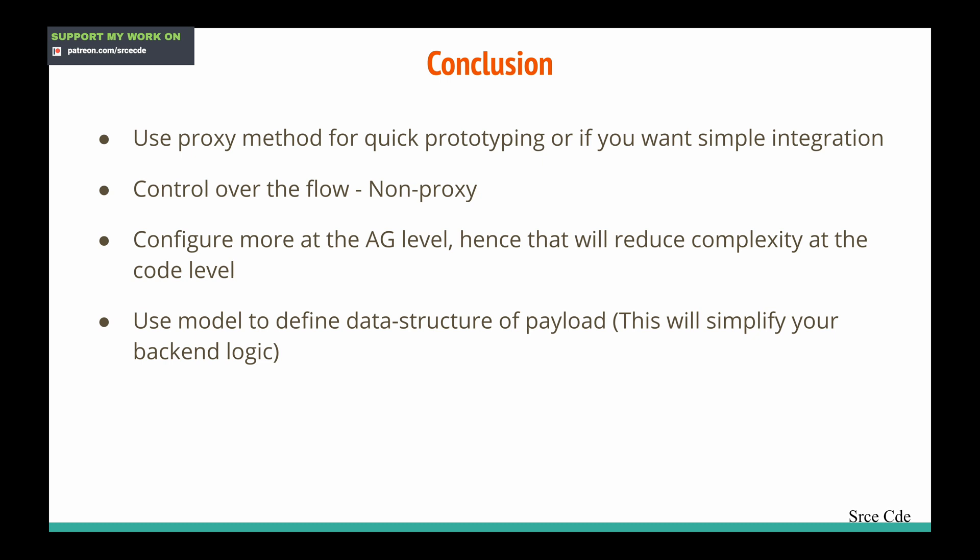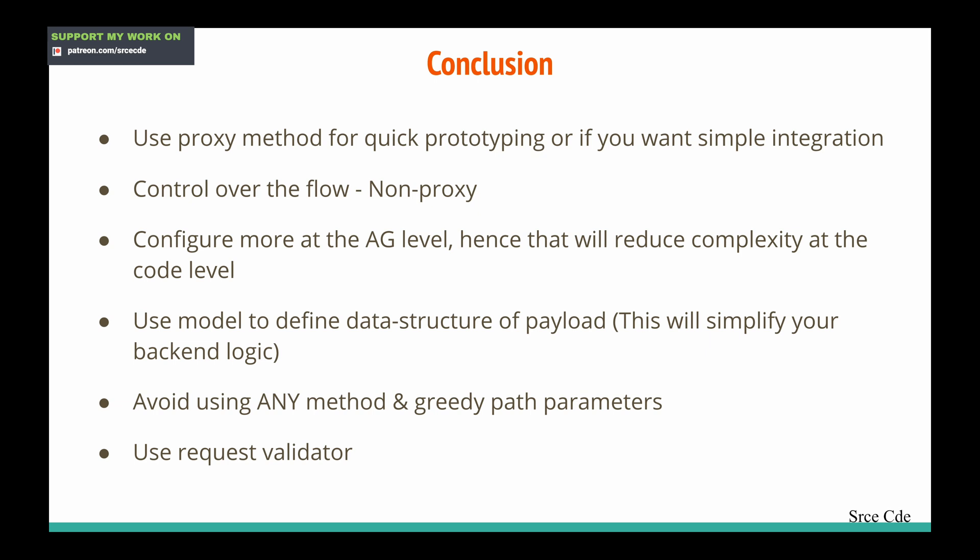Use models to define the data structure of payload, as this will simplify your backend logic — use it often. Avoid using any method and greedy path parameters, as this adds overhead to the backend: API Gateway will simply forward any request to the backend, and the backend will have to decide whether the parameters are valid, causing invocation cost. This also enforces you to define specific logic per HTTP method, increasing code complexity. Finally, do use request validators to validate the request data.